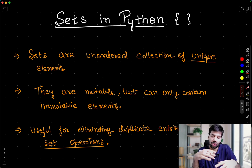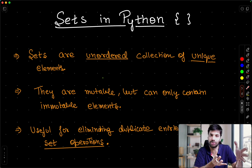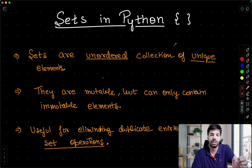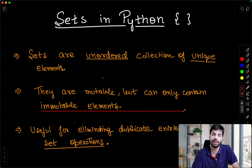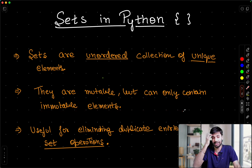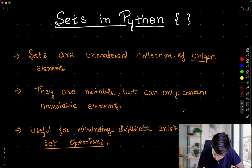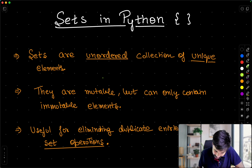Sets are used a lot to remove duplicates. If you provide one, one, one — something like that — it is just going to return you a single one. Sets are mutable, but can only contain immutable objects and elements. This is very important to understand: sets are mutable.